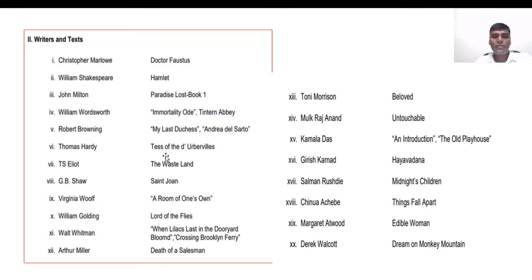The next text is The Wasteland, a modern text published in 1922 by T.S. Eliot. Saint Joan is a novel — sorry, a play — written by George Bernard Shaw, and after its publication, George Bernard Shaw received the Nobel Prize.